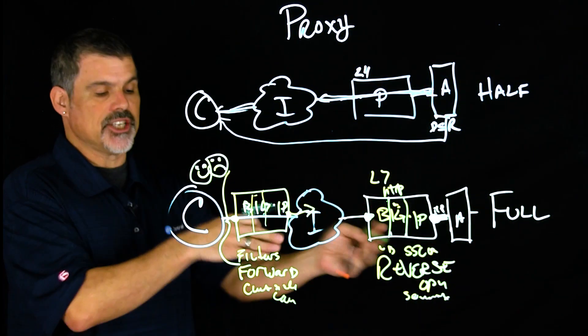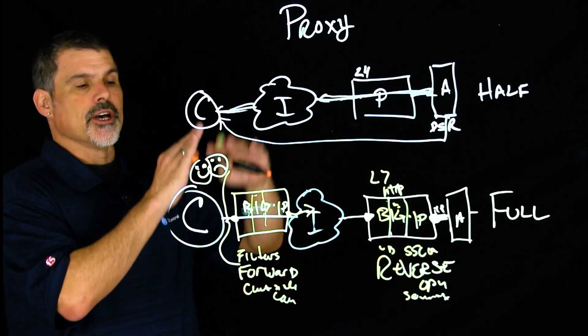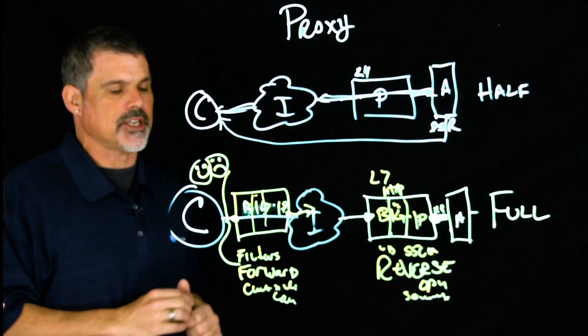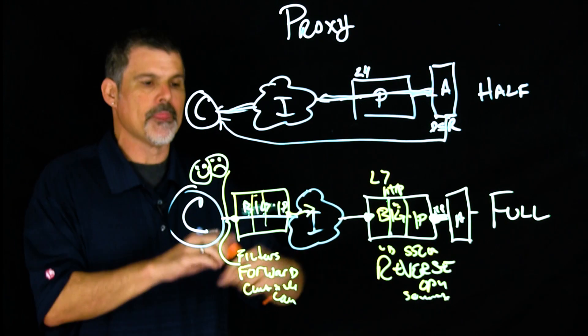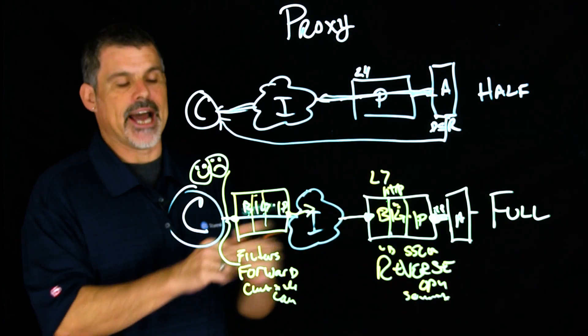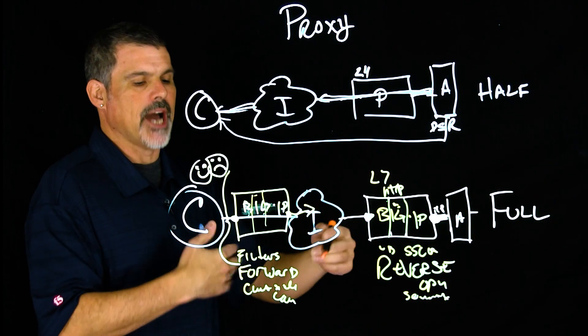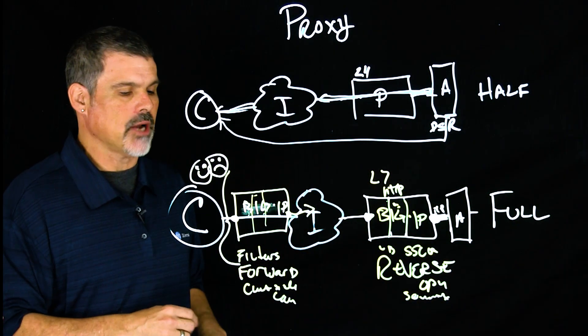Over here, you do server side caching. On this side, say there's a viral video that went crazy and everybody wants to see this new cat video out. You can do the client side caching, cache the video here on this end. And now you're not using up and chewing up your bandwidth.